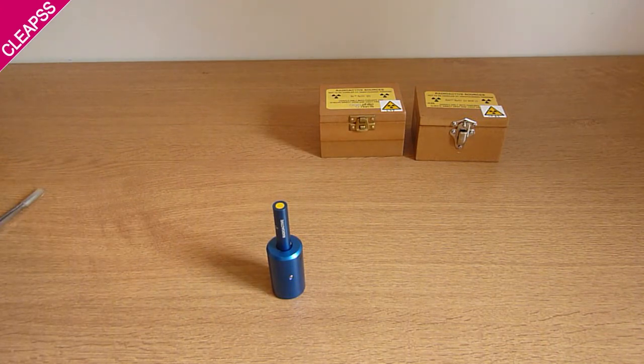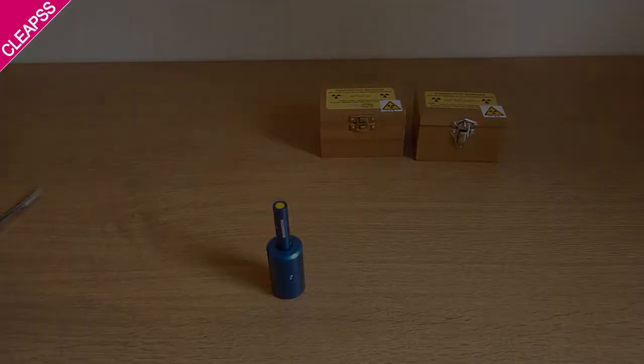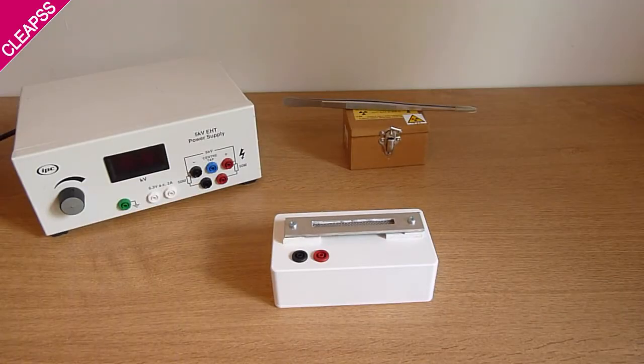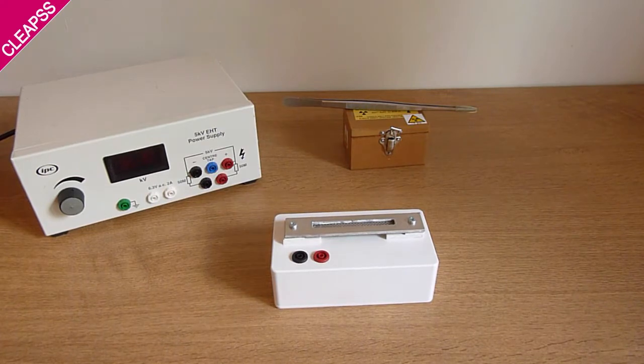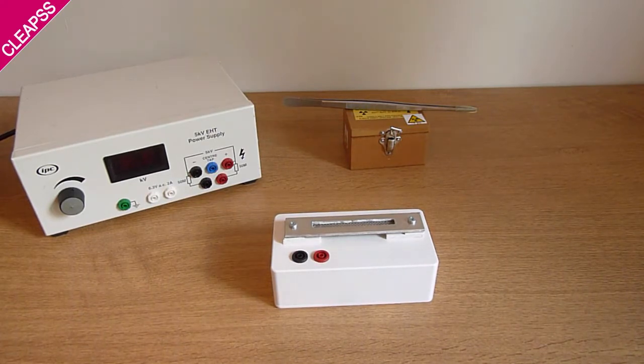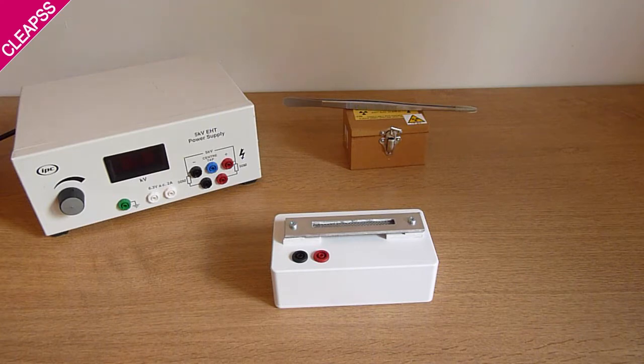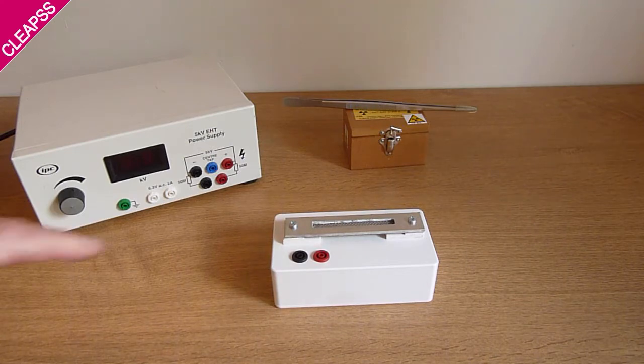And now we're going to see them being used in practical activities. Now I'm going to demonstrate using a cup sealed source. I'm going to use an americium source, americium-241, which is an alpha emitter. It's also a gamma emitter. And a spark counter.